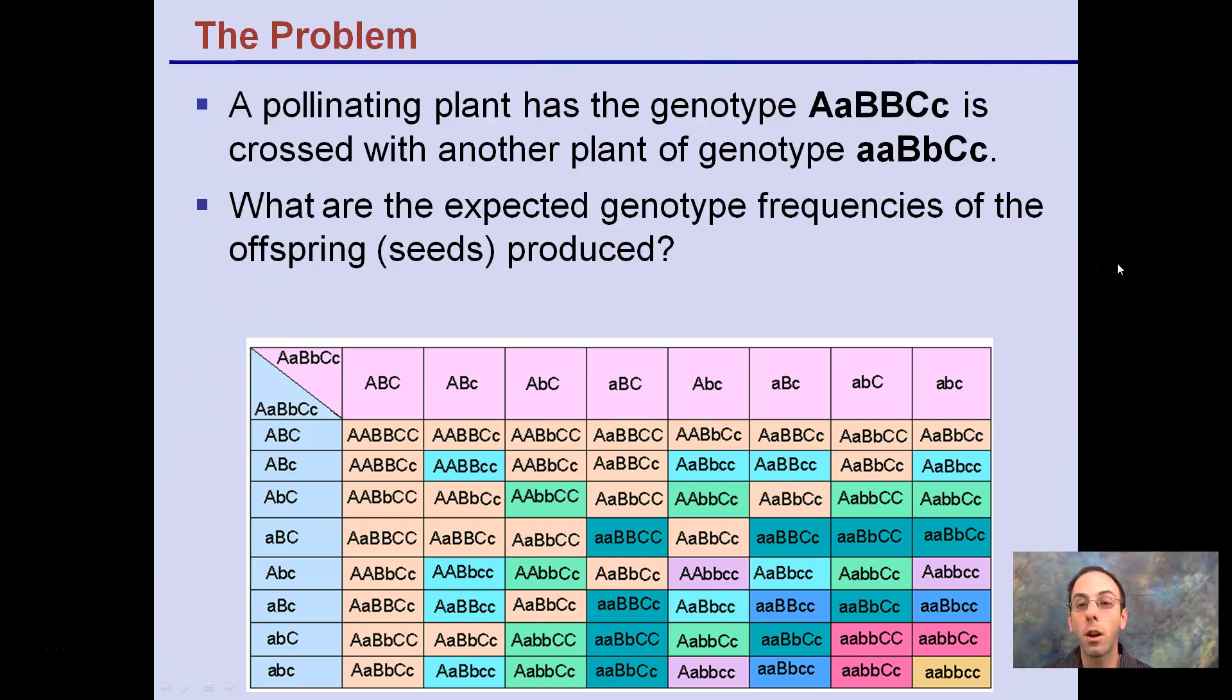If you wanted to do a trihybrid cross with a Punnett square, it'd look like this complex mess here. We want to try to avoid that.